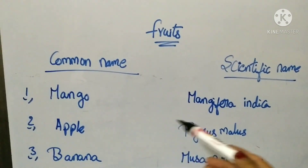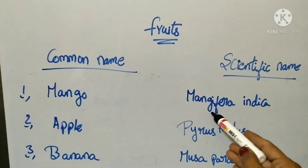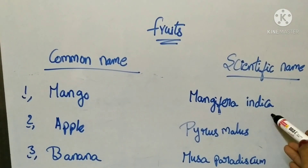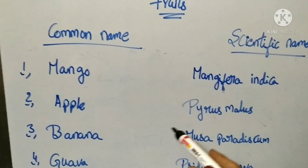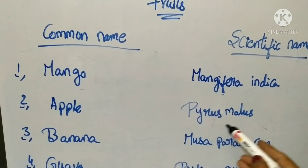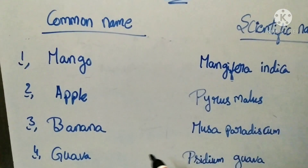First question: Mango. The scientific name of mango is Mangifera indica. Apple — the scientific name of apple is Malus domestica.